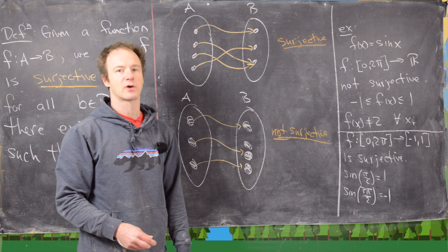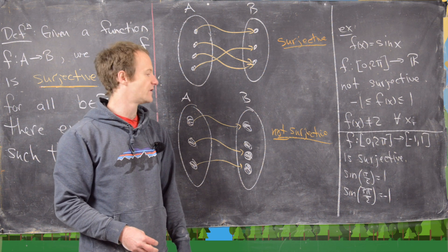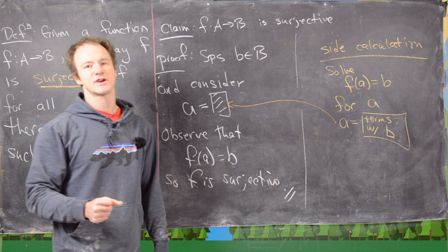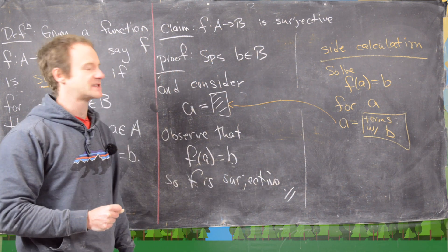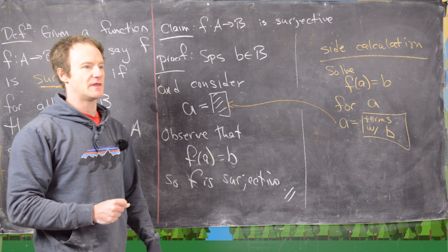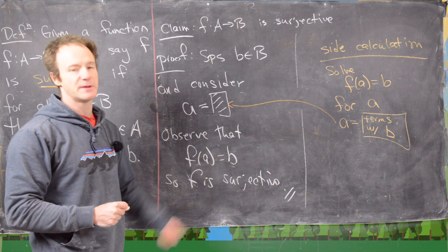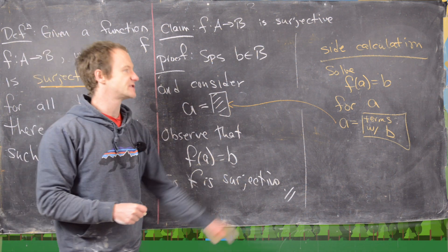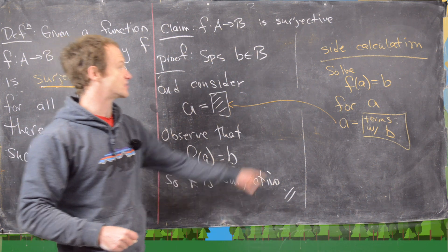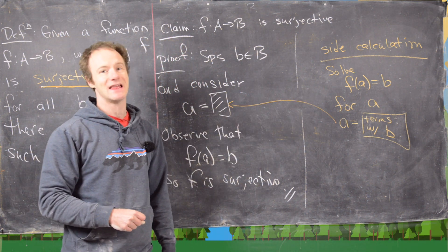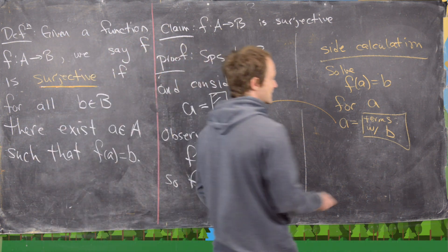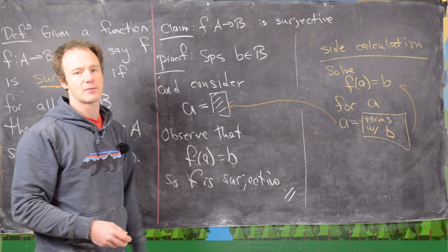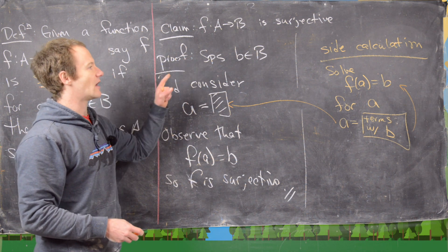Now we're going to look at an outline of a proof that a function is surjective. It's really important that we look at this outline because there's a bit of a trick to it. Our claim is that f is surjective, and notice there's a really important side calculation. This side calculation is not in the proof — in fact, the side calculation in reverse will end up in the proof, and it will appear at the end.